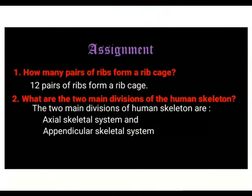Assignment. Question 1: How many pairs of ribs form a ribcage? 12 pairs of ribs form a ribcage. Question 2: What are the two main divisions of the human skeleton? The two main divisions of the human skeleton are the axial skeletal system and the appendicular skeletal system.